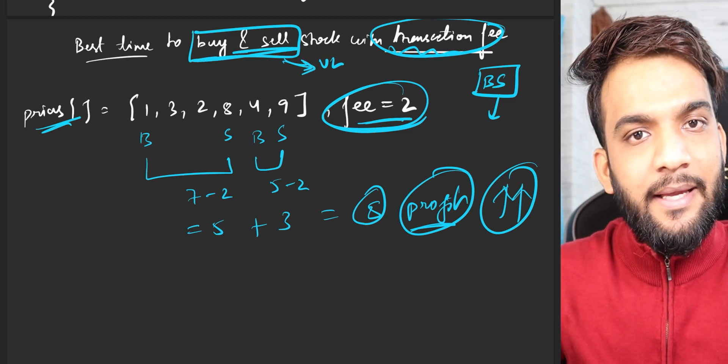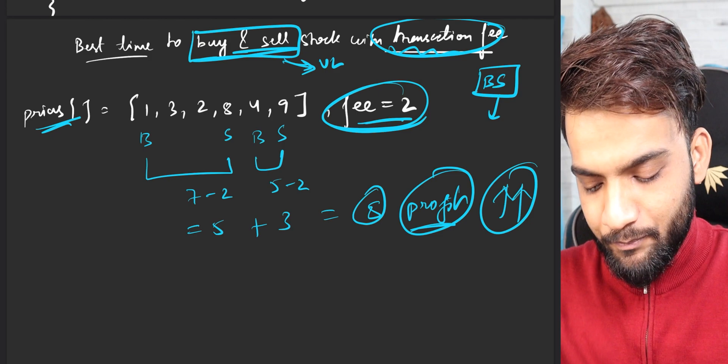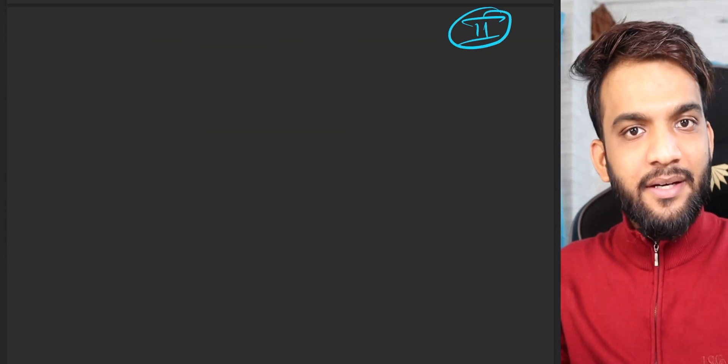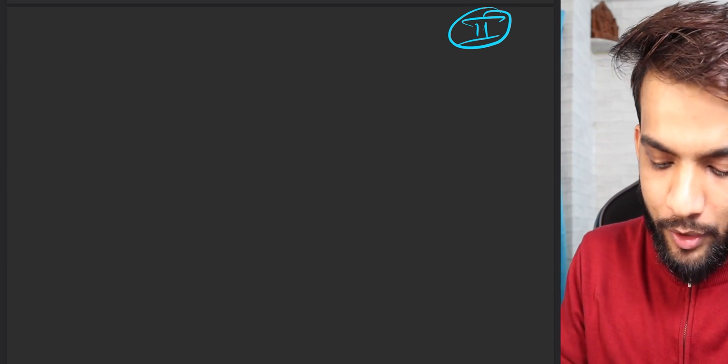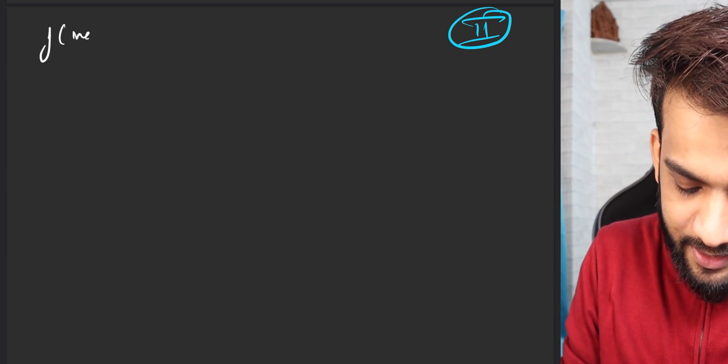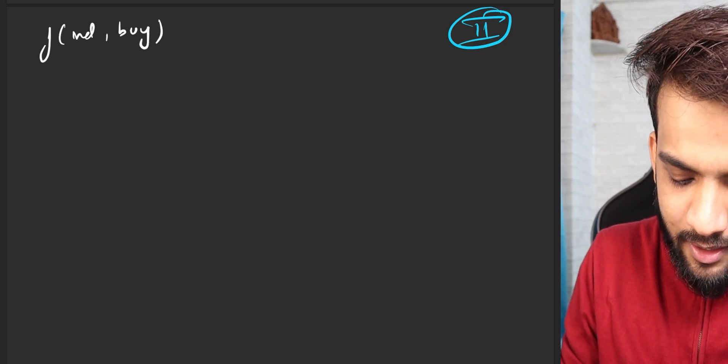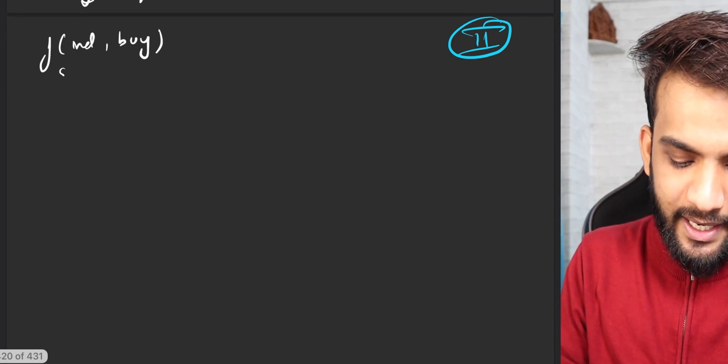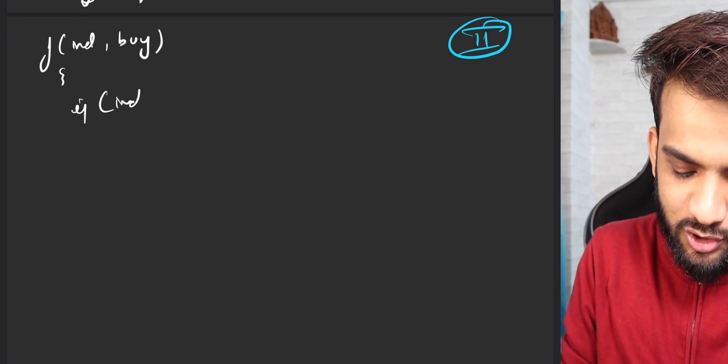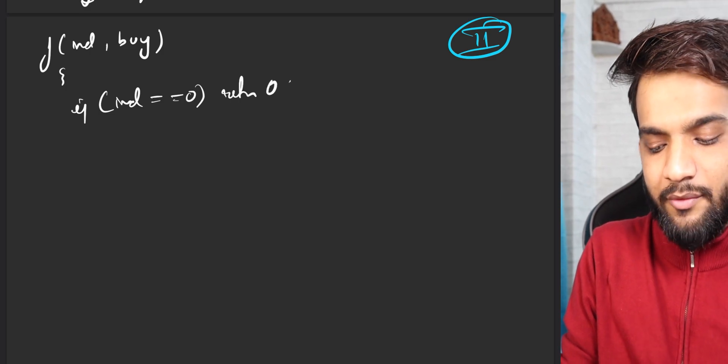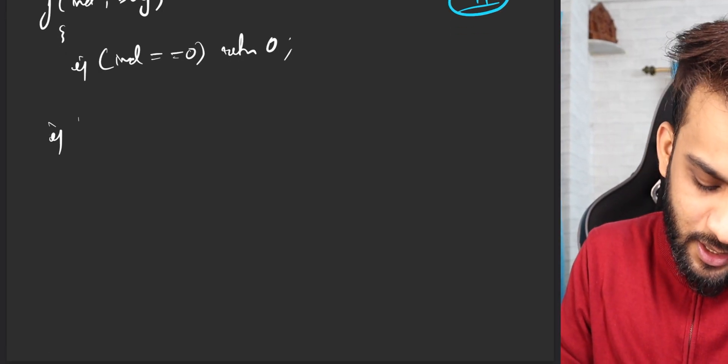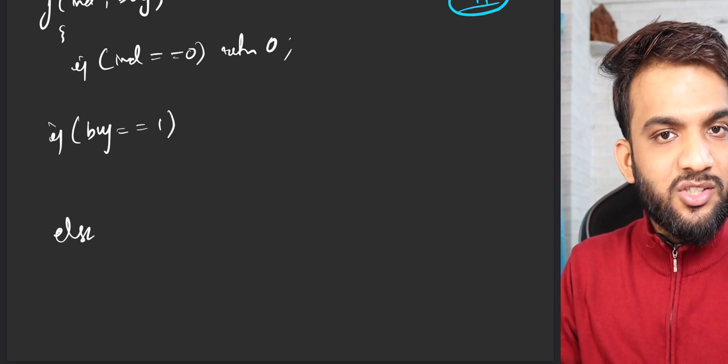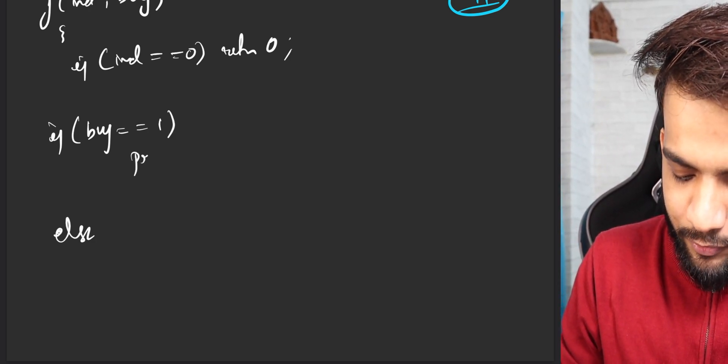So buy and sell unlimited times. Remember the second problem? Yes, buy and sell part 2. Over there, unlimited time was there. And if you remember the code, it was something like we had an index, we had a buy. Initially, index was passed on at 0, and buy was initially this. And we went on to saying the base case to be index equal to n, and you can return 0 whenever you have exhausted the days. And you will be like, if buy is 1, you can buy, or else you can just get across.